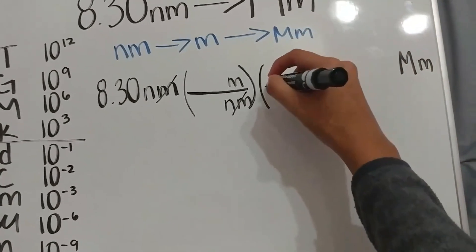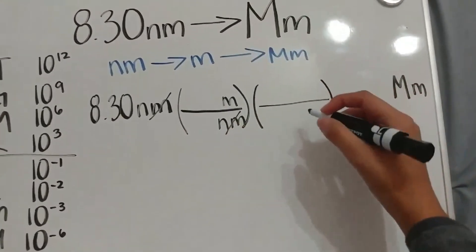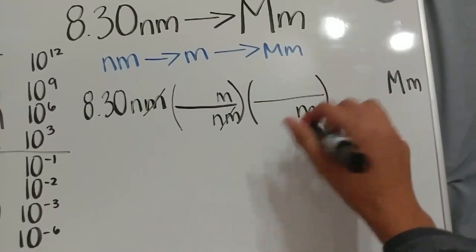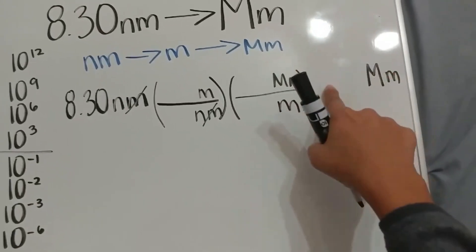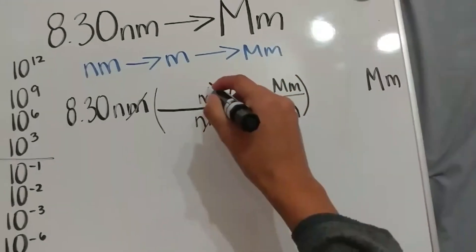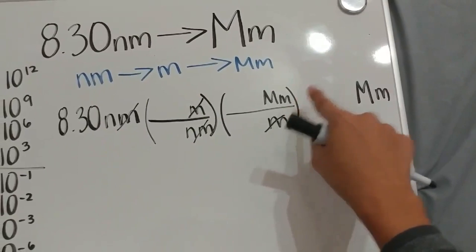Next, we are going to convert from meters to megameters, so we need to have meters at the denominator, or the bottom, and megameters in the numerator at the top, because that's what we're looking for. So therefore, these cancel out, and now we have the unit of megameters that we needed.